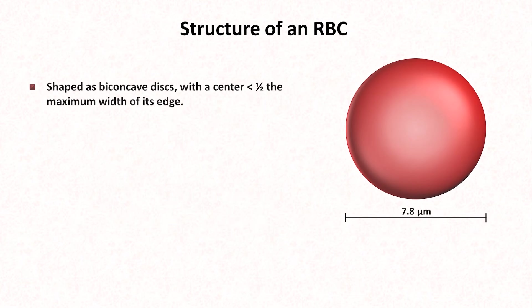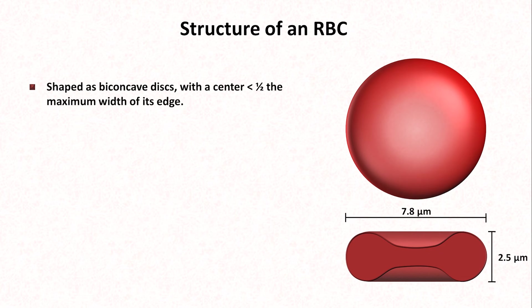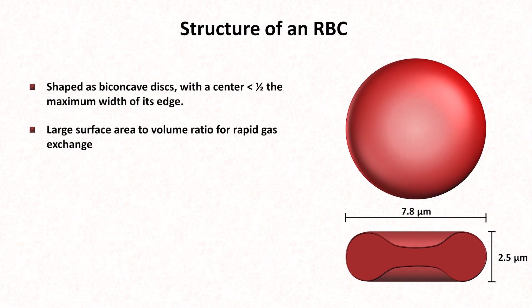Starting with their structure, they are shaped as biconcave discs, with a center less than half the maximum width of its edge. This gives the red blood cell a very large surface area to volume ratio, which aids in rapid gas exchange across the cell membrane.